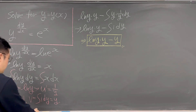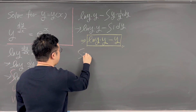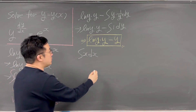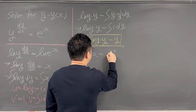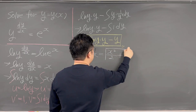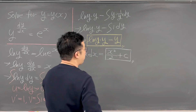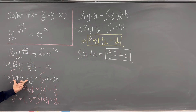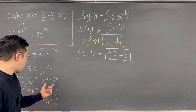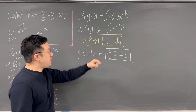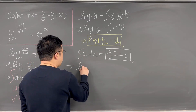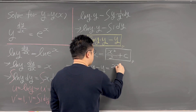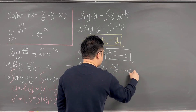At the same time, the antiderivative of x dx on the right-hand side is x squared over 2 plus the constant C. So the left-hand side, y·ln(y) minus y, must equal the right-hand side, x²/2 plus C.